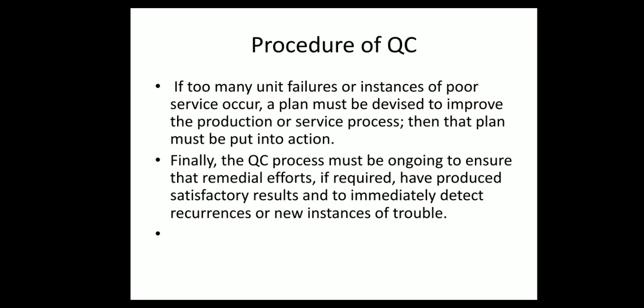If too many unit failures or instances of poor service occur, a plan must be devised to improve the production or service process, and then that plan must be put into action. For example, if there are many ring frame bobbin breakages, the ring frame manager should check the machine and take corrective action, or a plan should be chalked out to prevent such problems. Similarly, in any other department, frequent or major failures should be cut down through corrective action.